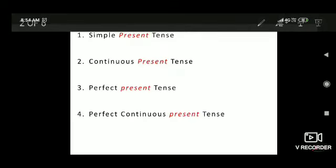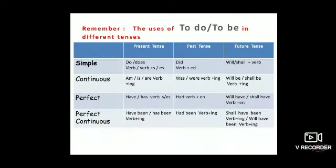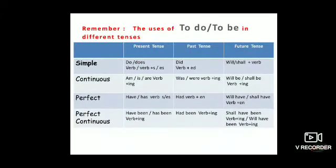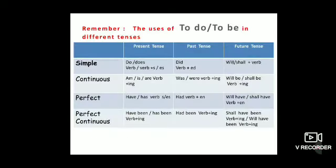First is simple present tense, continuous present tense, perfect present tense, and perfect continuous present tense. Then simple past tense, continuous past tense, perfect past tense, perfect continuous past tense, and then simple future tense, continuous future tense, and perfect future tense. Before we study sentences in different types of tenses, we must understand the uses of verb in the different tenses.